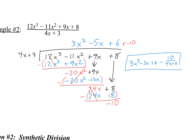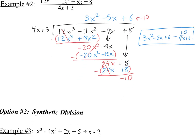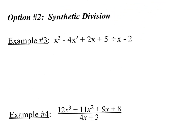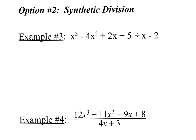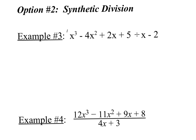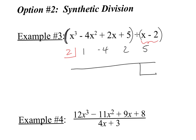However, there's another way: synthetic division, which can be a lot easier. Let's do example 1 again using synthetic division. For synthetic division, all we care about are the coefficients, and we need to know the zero of whatever we're dividing by. The zero of x minus 2 is 2, so I put 2 in the top left corner. Then I list the coefficients: 1, negative 4, 2, and 5. I draw a line and a box for the remainder.